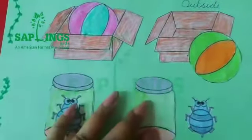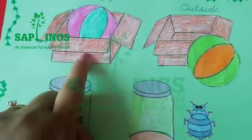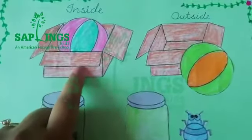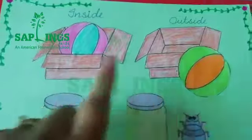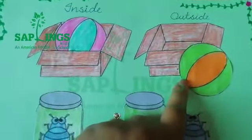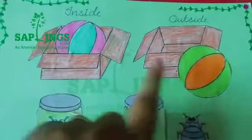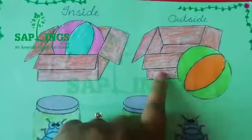See, the ball is inside the box. The ball is inside the box and this ball is outside from the box. So this is in and this is out.